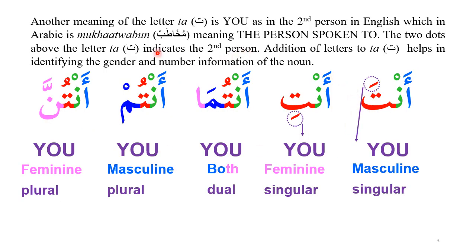Ta can also mean other things, such as a second person — a second person whom you can see — which is called 'mukhatabun' in Arabic. This is because in ta, the two dots are above the baseline, and this looks like two eyes with which you see somebody in front of you.